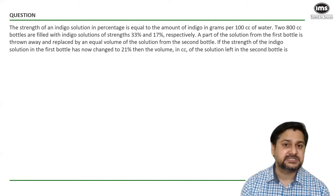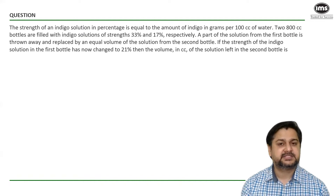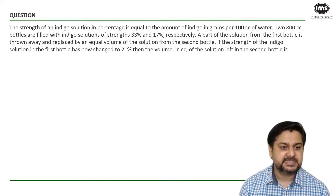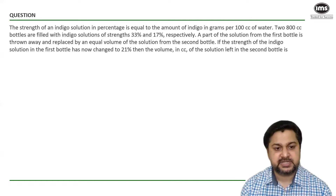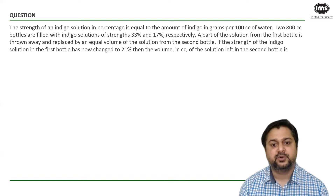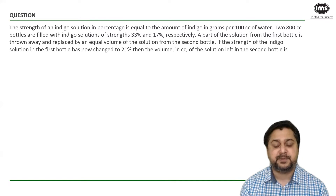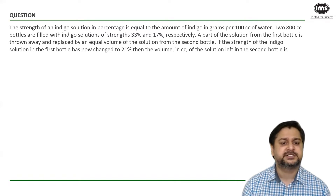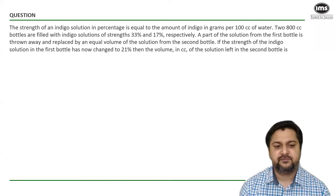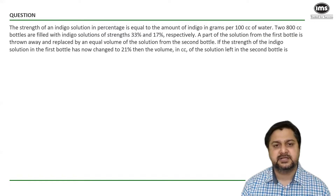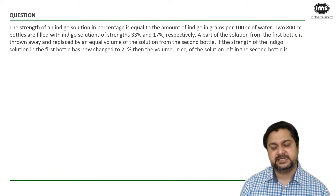I hope everybody had paused the video. Let's try to look at the approach now. The question says the strength of an indigo solution in percentage is equal to the amount of indigo in grams per 100 cc of water. So the first statement is really trying to make you understand what you mean by the concentration of the indigo solution — the amount of indigo in 100 cc in terms of percentage.